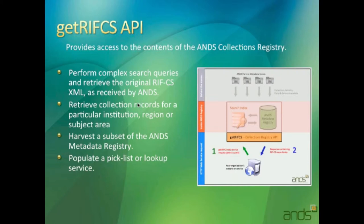This service pulls out RIVCS XML, so it's useful to people that understand RIVCS XML or are using it in their own repository. One of the uses is to populate a picklist or lookup service — so in a repository where people are doing relationships to RIVCS records, they can do a populated picklist of say collections or parties from a certain institution, or grants from a specific year or something similar.